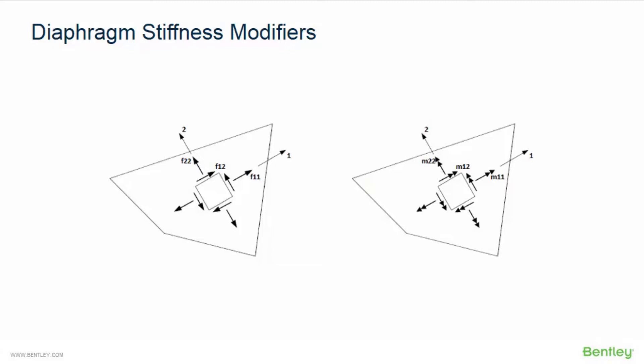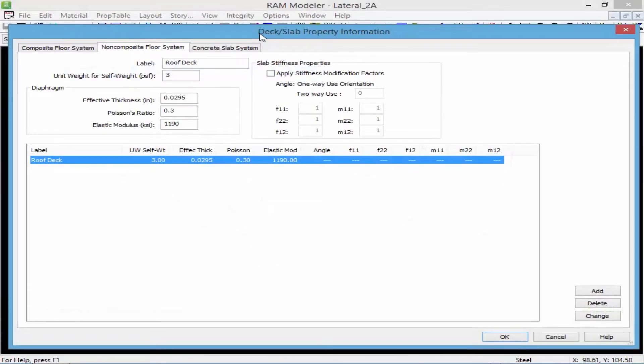Referring to the figure, the six modifiers can be explained as f11, f22, and f12, which are factors intended to modify in-plane stiffness.